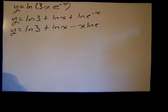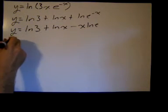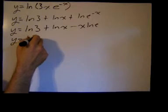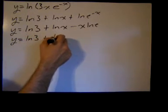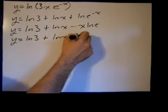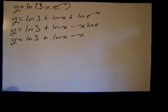And then I have, now my expression, natural log of e is just 1. I'm going to derive y equals the natural log of 3 plus the natural log of x minus x, because the natural log of e is just 1.